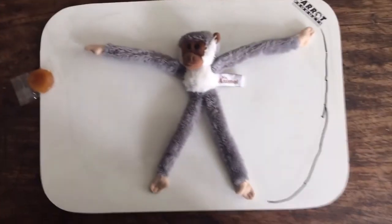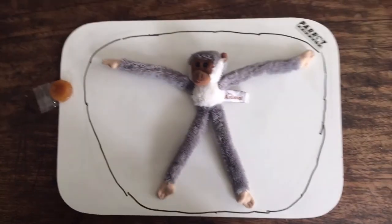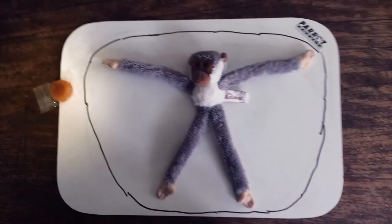If we draw a circle around Milo, we can think of the circle as Milo's field. He can only grab things within the circle.